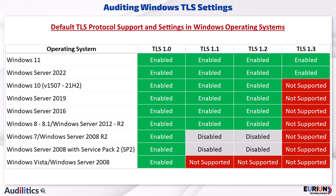Windows 11 and Server 2022 currently support the most recent version of TLS, which is TLS 1.3. For backward compatibility, Windows operating systems also enable the older versions of TLS by default, which includes the vulnerable early TLS versions.